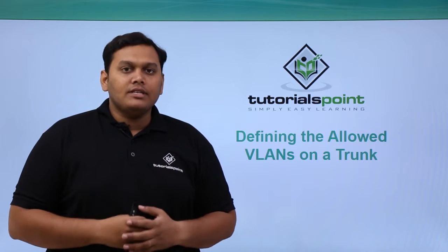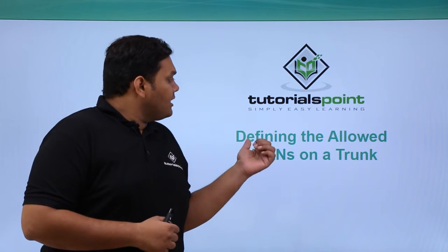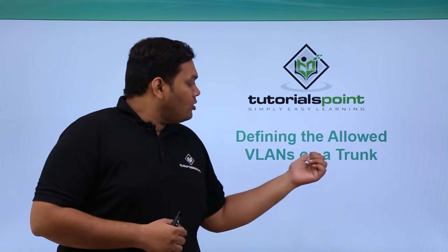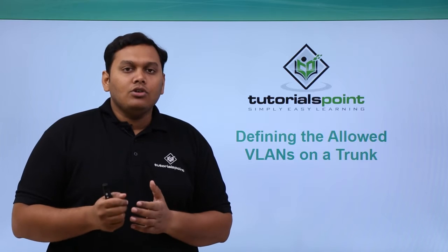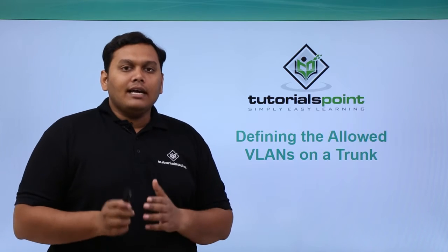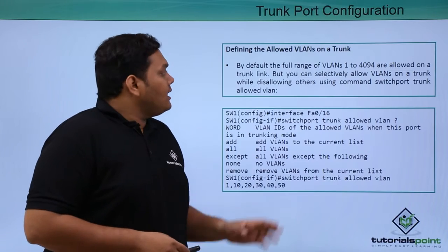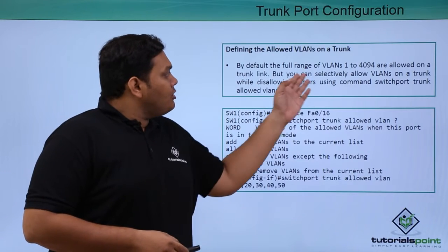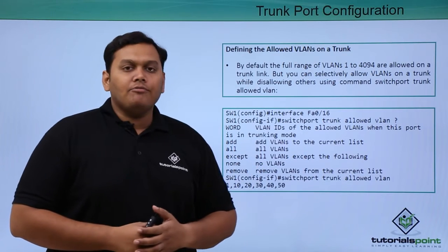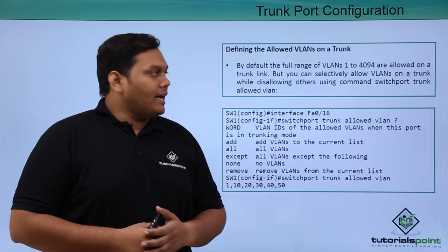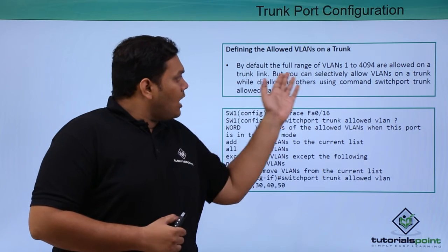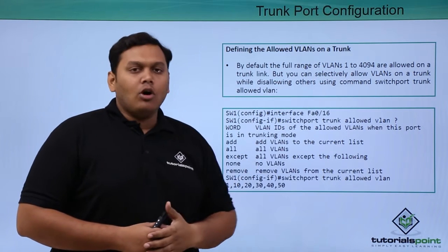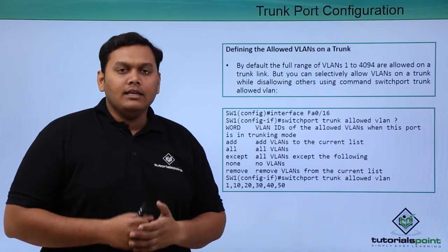In this video, we are going to discuss about defining the allowed VLANs on a trunk. By default, the range of VLANs are from 1 to 4094, and these are all allowed on a trunk link.